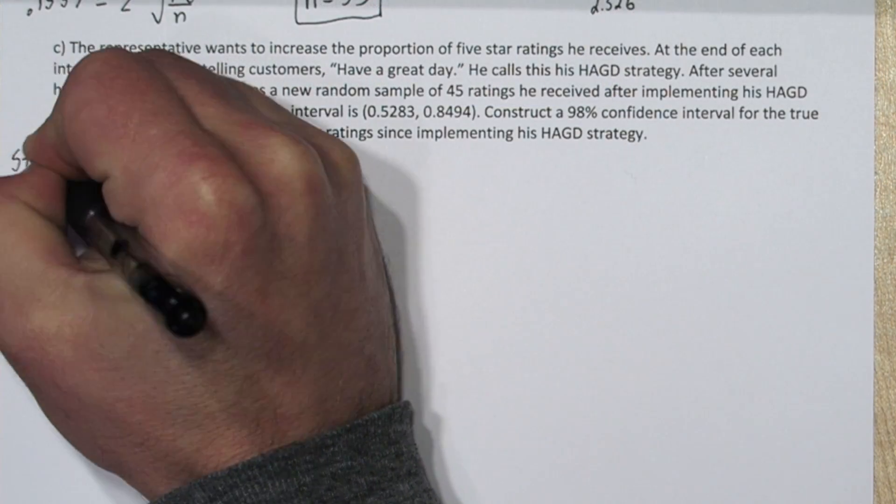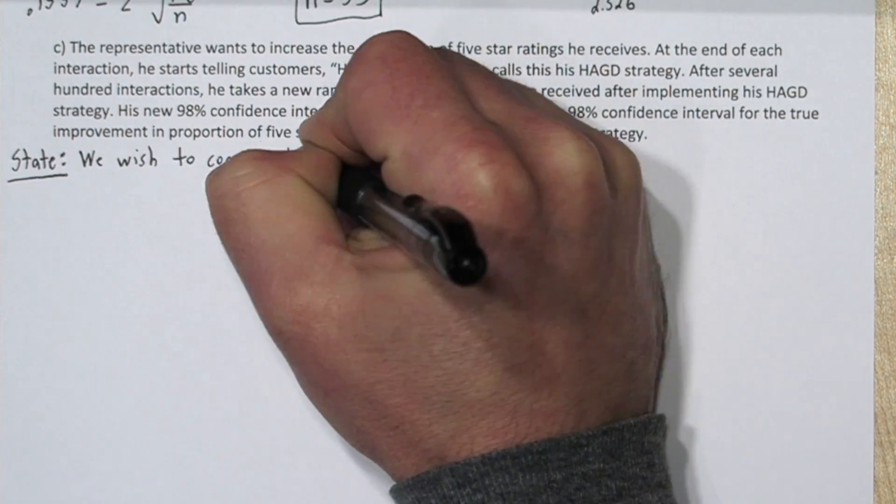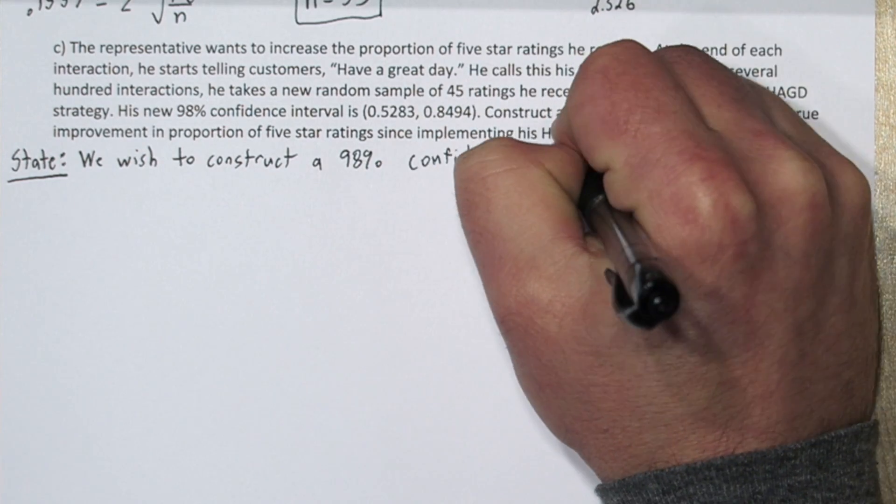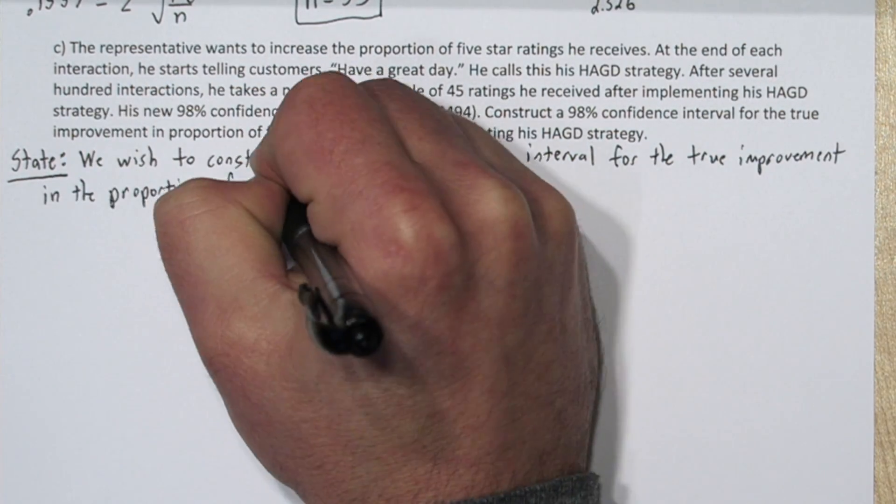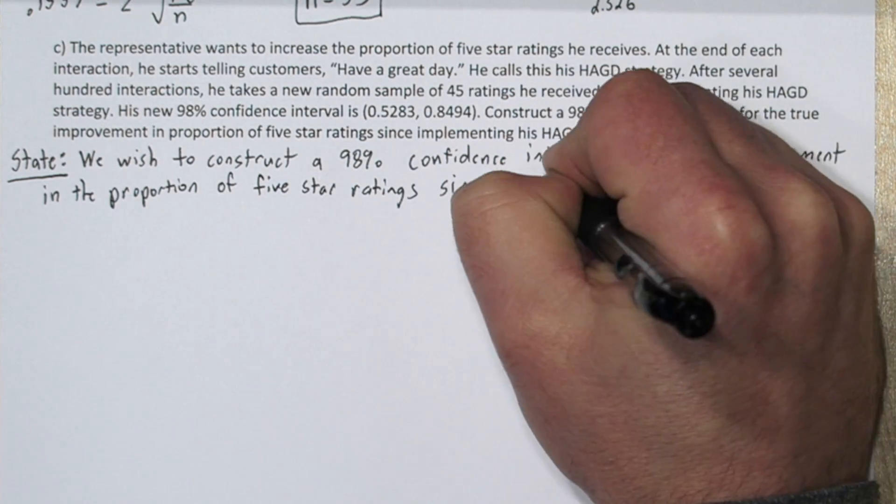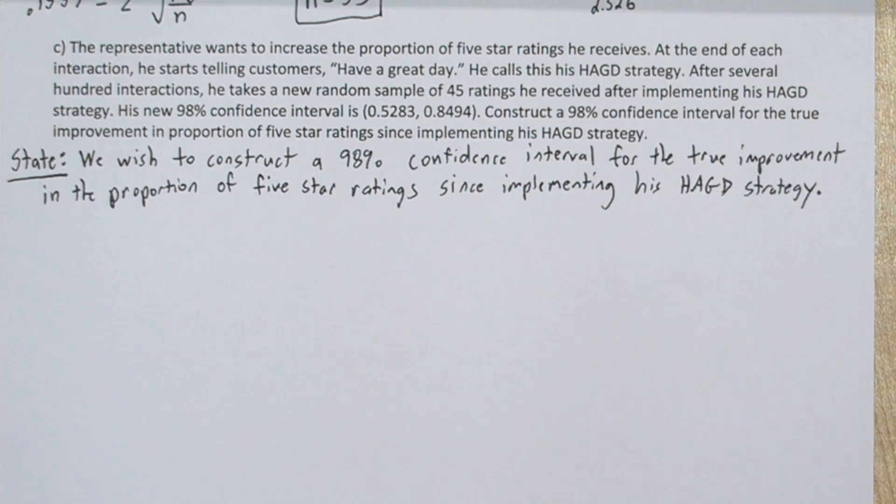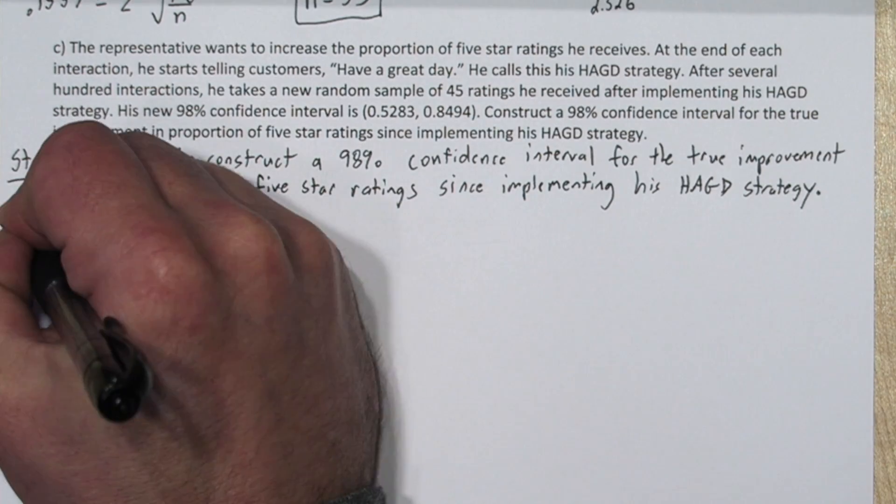Let's use the four step solving process for part c. For our state step, we wish to construct a 98% confidence interval for the true improvement in the proportion of 5 star ratings since implementing his have a great day strategy.